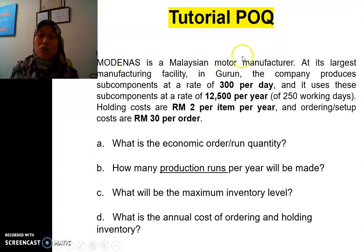Modenas is a Malaysian Motor Manufacturer, and they give us information on the company produced subcomponent for the motorcycle with the rate of 300 units per day. It means that one day it produced maybe the subcomponent, the exhaust, or the brake pad, or something that related to the assembly of the motorcycle.